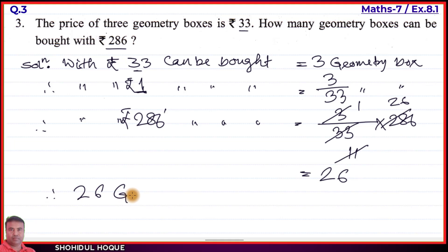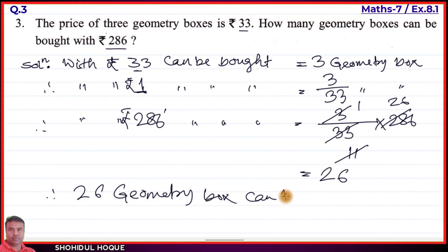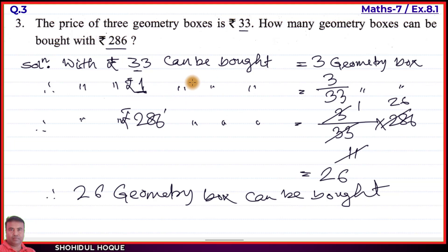Therefore, 26 geometry boxes can be bought with rupees 286. Question number 3 is solved. Now moving on to question number 4.